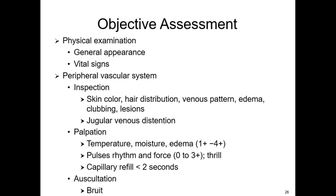Under palpation, check the temperature of the skin — is it warm, is it moist — look at edema, and assess pulses. We grade pulses from 0 for absent to 3+ for bounding; normal is 2. Check capillary refill and bruits. Under vital signs, look for a pulse deficit — the difference between the apical and radial pulse taken simultaneously. If there is a pulse deficit, meaning you hear more beats than are transmitted to the radial artery, there could be a cardiac dysrhythmia requiring cardiac monitoring.